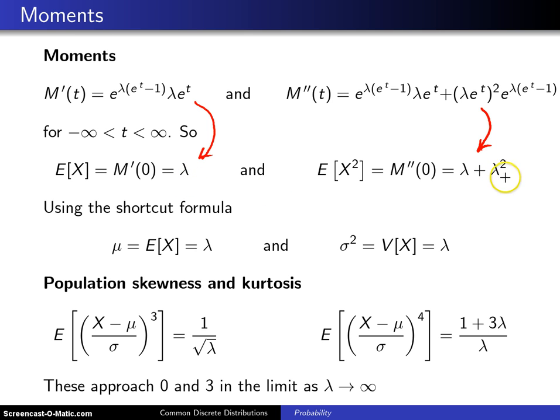Using the shortcut formula for the population variance, V of x will be the expected value of x squared minus the expected value of x squared. The lambda squareds drop out and you get a population variance which is also lambda. This is an unusual distribution in that the population mean and variance are both the same value.